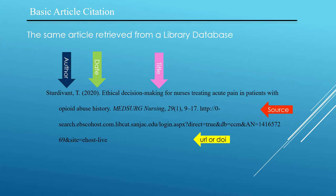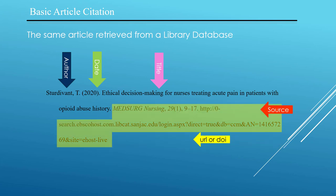The same article retrieved from a library database has exactly the same citation up until the source information. After the page numbers, there's the URL in this case, or the DOI if one has been provided.